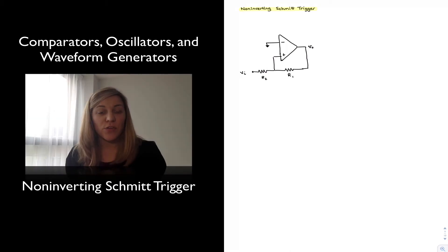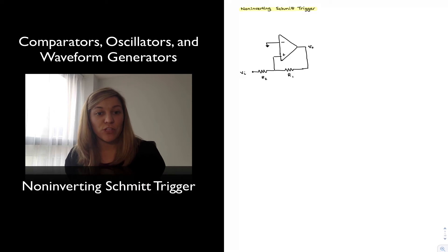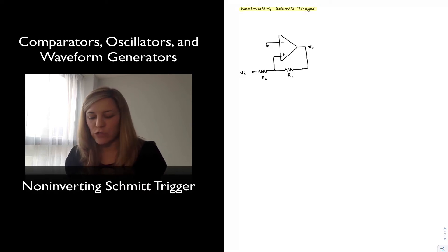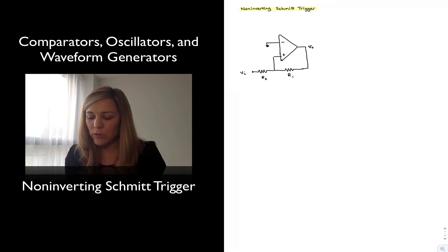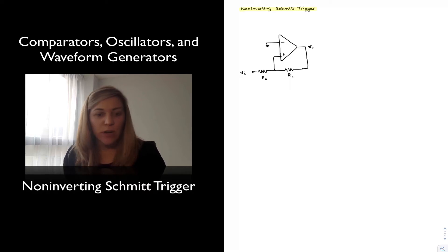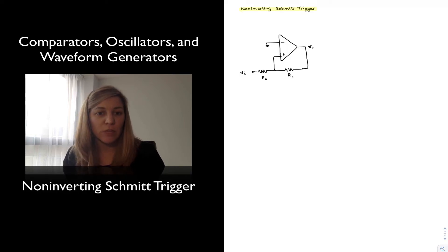In this video we are going to take a look at the non-inverting version of the Schmitt trigger and we're going to perform a similar analysis to what we did for the inverting version. We have a very similar circuit configuration where we have the op-amp or comparator and the two resistors R1 and R2, but notice that now the input signal is being applied to the non-inverting input terminal and the inverting input terminal is simply tied to ground.